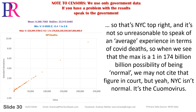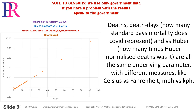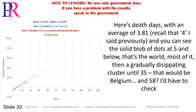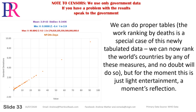When we see the max is a one-in-174 billion billion possibility of being normal, we may not cite that in court, but New York City isn't normal — it's the Cuomo virus deaths. Death days measures how many standard days' mortality COVID deaths represent versus WHO Bay — essentially the same underlying parameter with different measures, like Celsius versus Fahrenheit. Average death days is 3.81, and you can see the solid blob of dots at 5 and below — that's most of the world — then a gradually dissipating cluster up to 35 (Belgium) and 58.